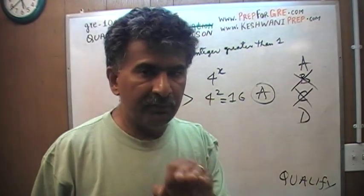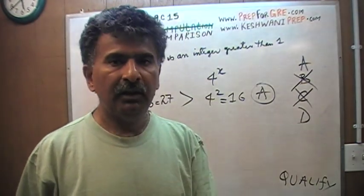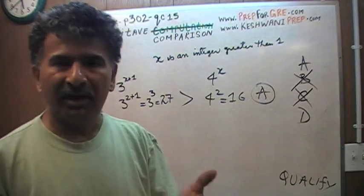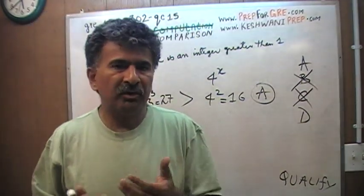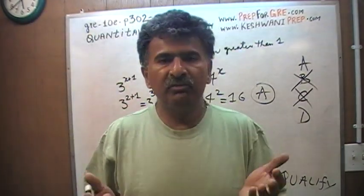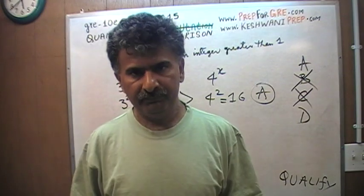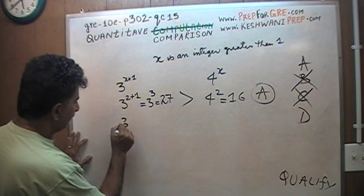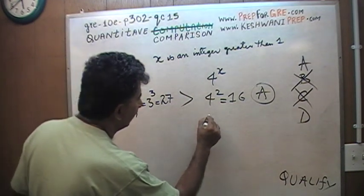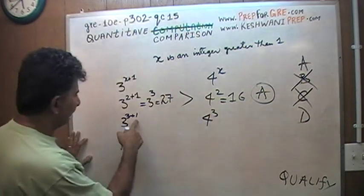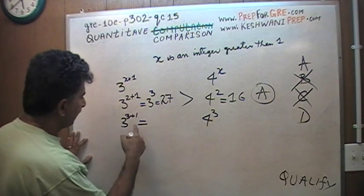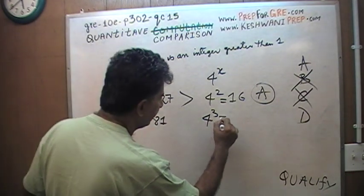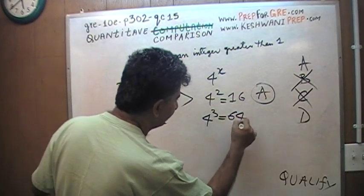All I'm going to do now is keep plugging in numbers until I find a contradiction. Let's try x equals 3. That gives 3 raised to the power of 4, which is 81, versus 4 raised to the 3rd, which is 64. That's 81 versus 64 — the answer is still A. Let's try one more.